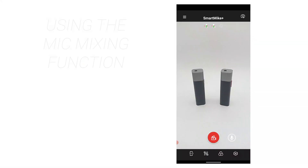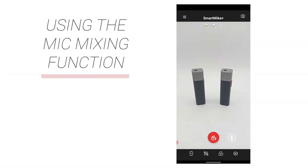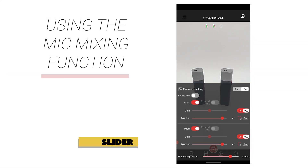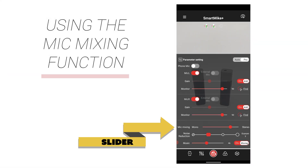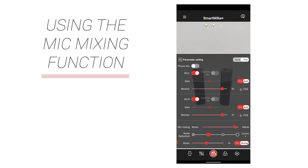For the mic mixing function, when two Smart Mic Pluses are connected in TWS mode, the mic mixing parameter allows you to set the input of the two microphones to be either mono or stereo.